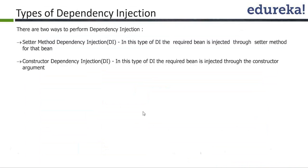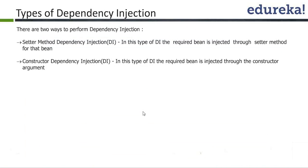There are two types of dependency injection supported by Spring. The first is setter method dependency injection, where the container uses setter methods to set values on the bean. The second is constructor dependency injection, where the container uses the respective constructor to inject the values.